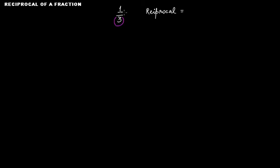The denominator in this case is 3, so the denominator becomes the numerator in the reciprocal. And the numerator here is 1, so it becomes the denominator in the reciprocal. That means the reciprocal of 1 over 3 is 3 over 1 — simply reverse the position of 1 and 3.